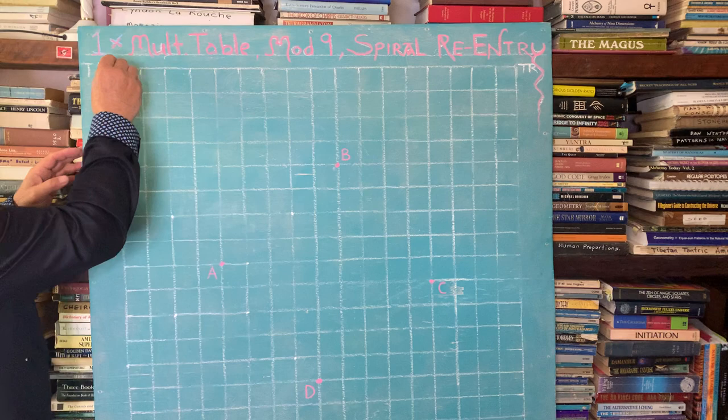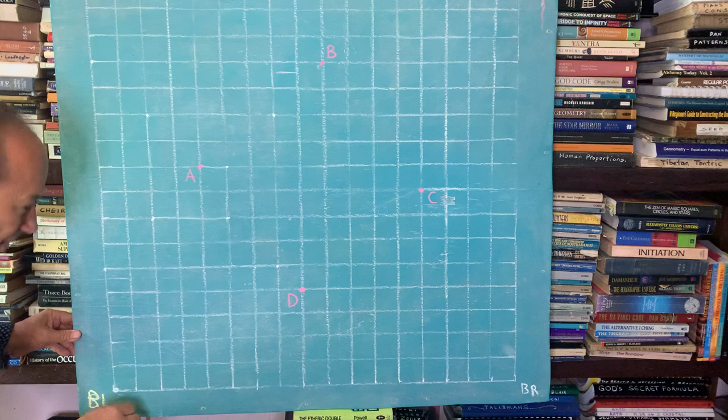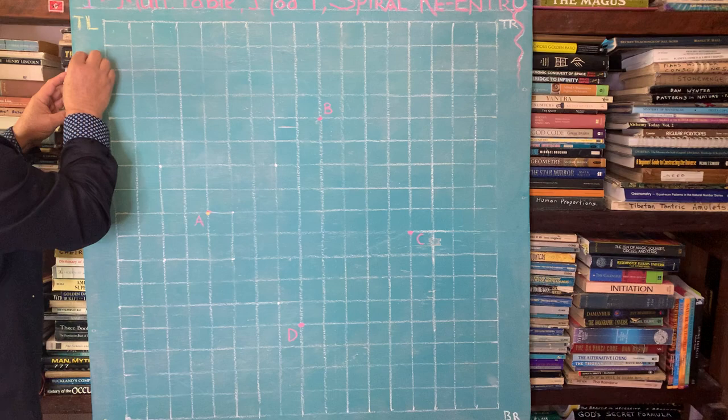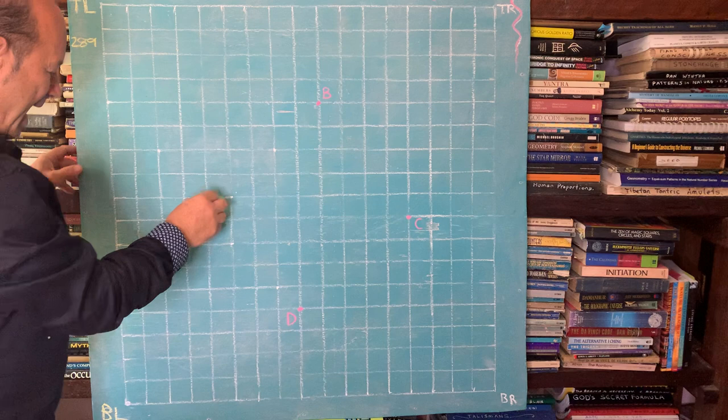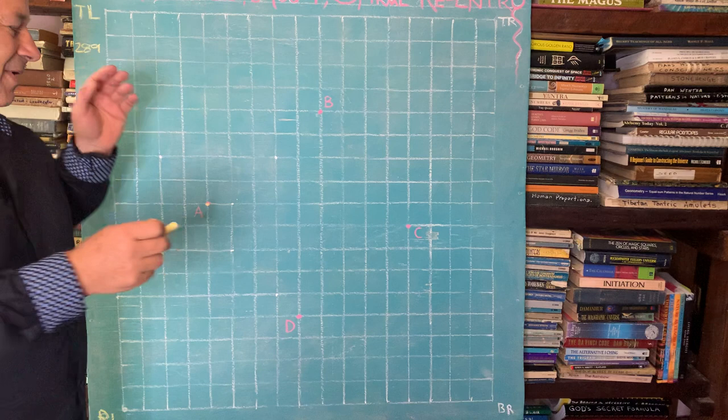What I'm going to do is take the one times table. I've created a 17 by 17 graph paper with top left, bottom left, bottom right, and top right. This whole grid is 289 little units. Just remember that number 289 because we're going to crack some codes. I'm going to start from point A, which I've already worked out is four across and nine up from this corner.